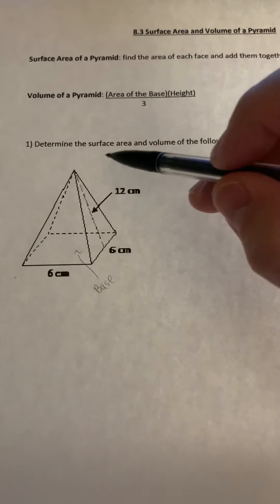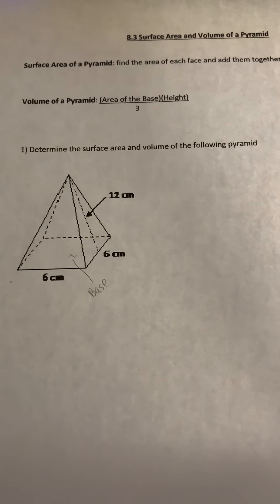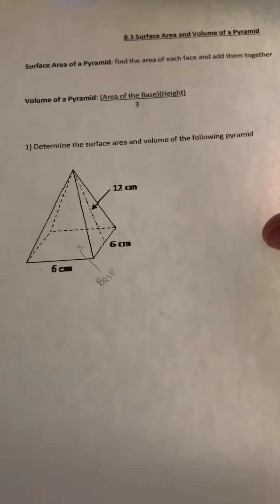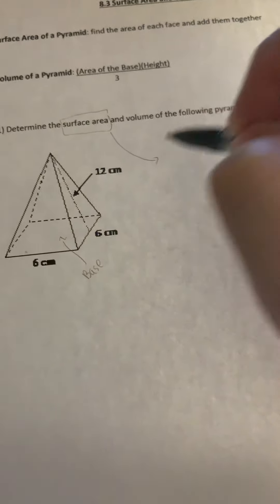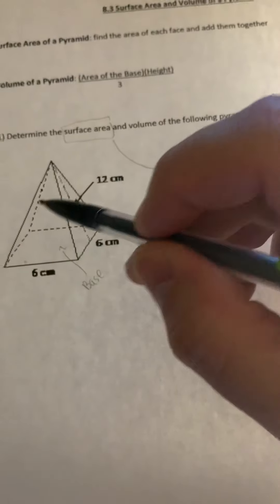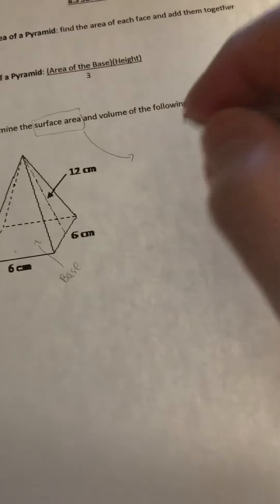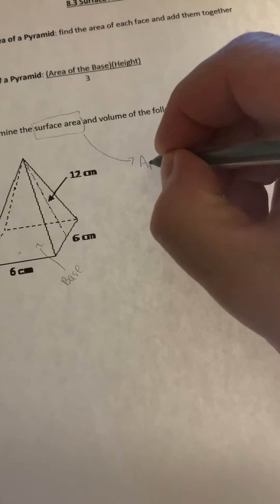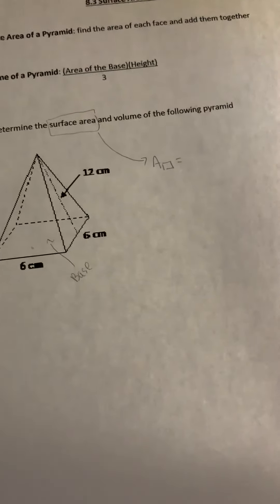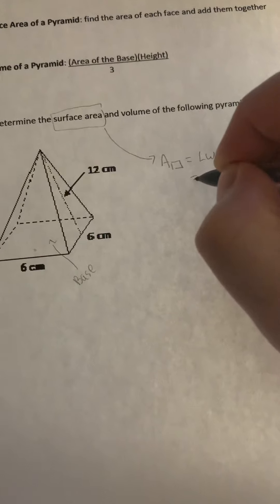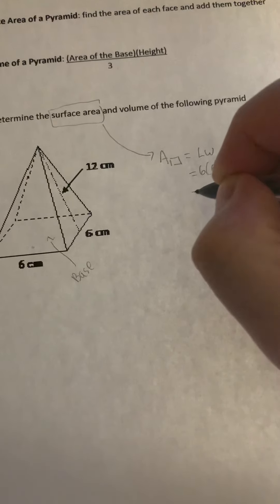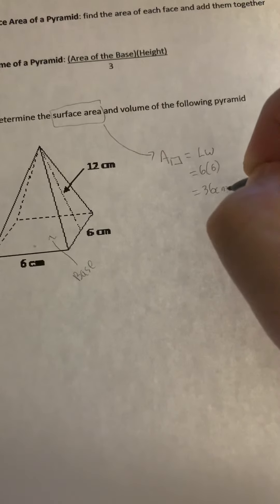Okay so we're going to find the surface area and volume of the following pyramid. So the surface area first, we're going to find the area of each triangle and the square. So let's do the area of the square first. The area of the square is length times width, which is 6 times 6. So 36 centimeters squared.